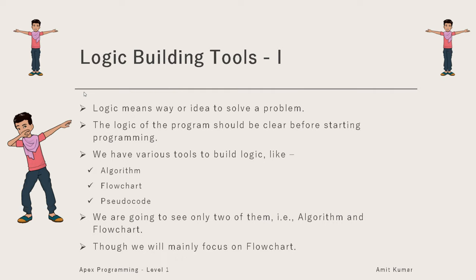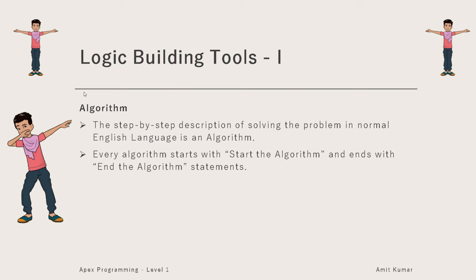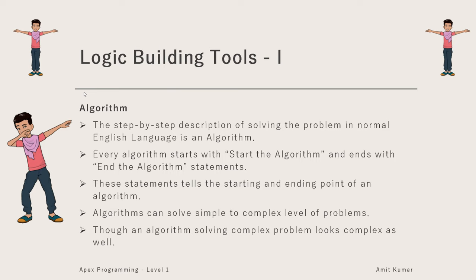What is an algorithm? The step-by-step description of solving a problem in normal English language or in your own language is an algorithm. Every algorithm starts with 'start the algorithm' and ends with 'end the algorithm' — these two statements are fixed in all algorithms. These statements tell the starting and ending point of an algorithm. Algorithms can solve simple to complex level problems, though an algorithm solving complex problems looks complex as well, which is why we will mainly focus on flowcharts.